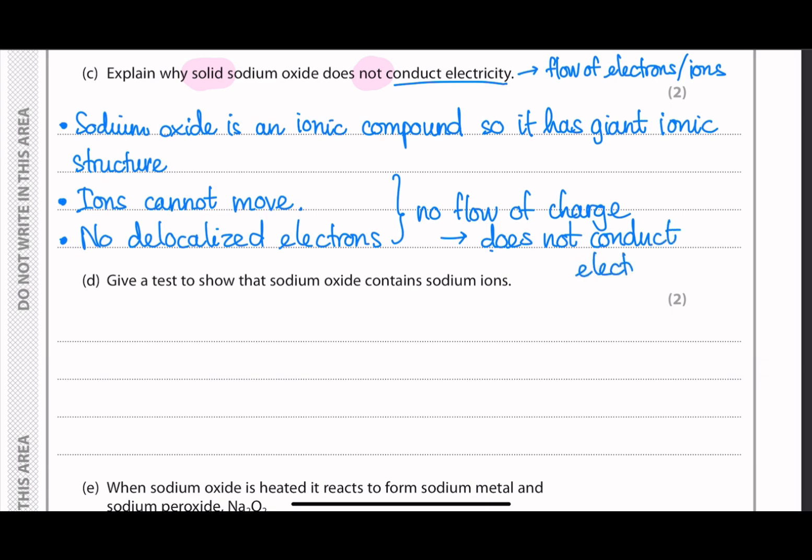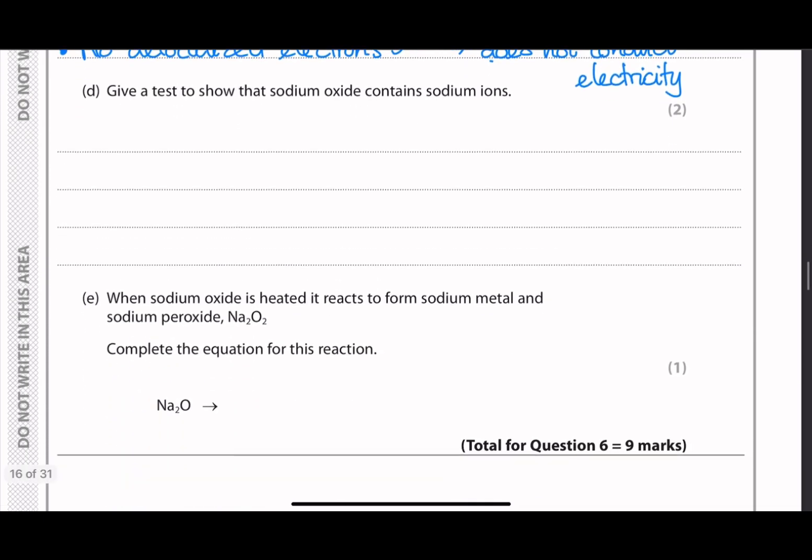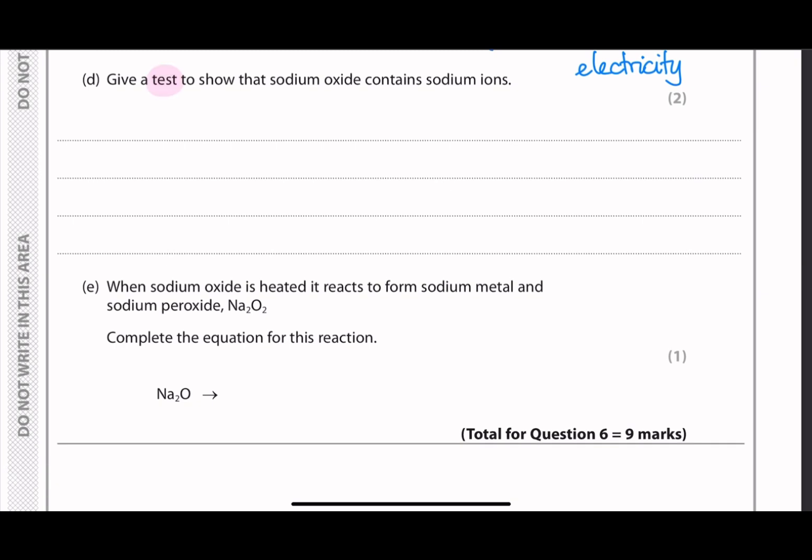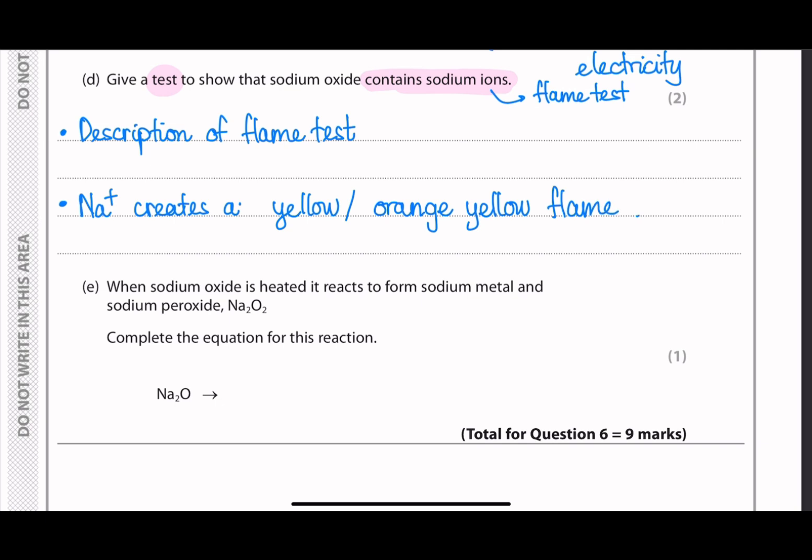So then we move on to the next question. Give a test to show that sodium oxide contains sodium ions. So usually in this chapter, we think immediately about the flame test, where you burn each of the metal and see the color of the flame, or each metal will have a distinctive color of the flame. And sodium ions, they create a yellow or orange-yellow flame. So that's how we know that they contain sodium ions.